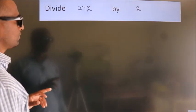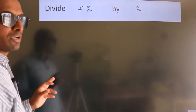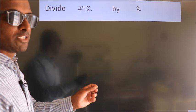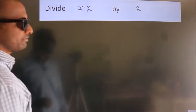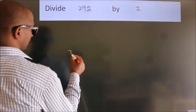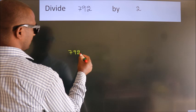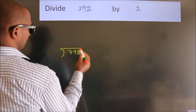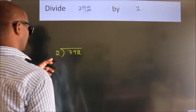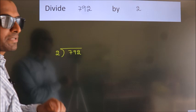Divide 792 by 2. To do this division, we should frame it in this way: 792 here, 2 here. This is your step 1.